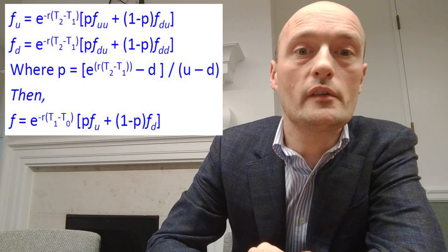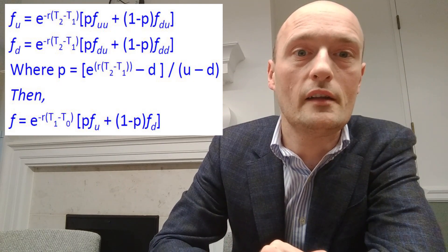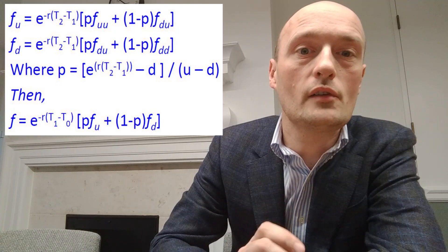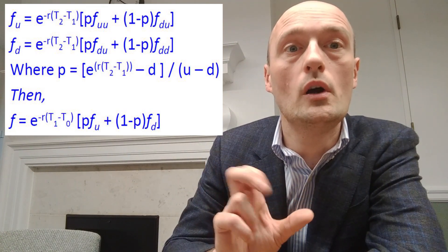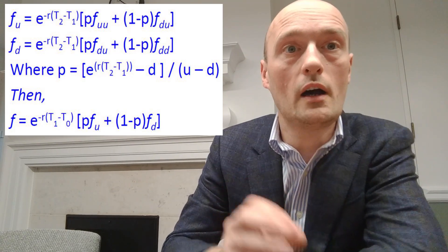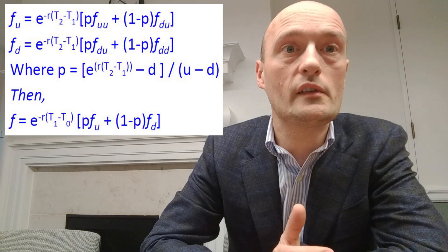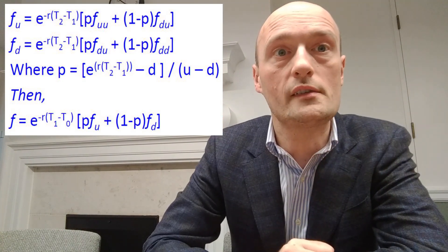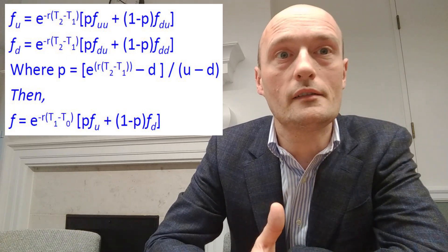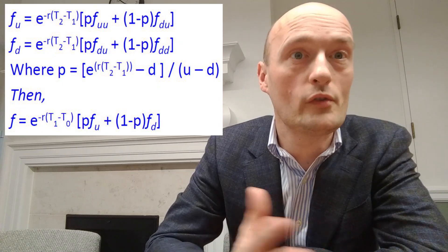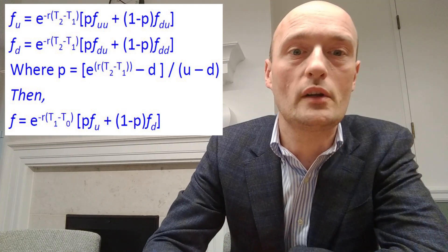Now one thing it's worth noting here is when you see the formula up on the screen, the difference between this one and the last one is it says e to the minus r times (t2 minus t1). What that really means is just that we have to divide up the time, the life of the derivative. So if it's a one month derivative and we're doing a two-step binomial tree, well the time period for each step has to be half of a month, and the reason for that is that otherwise we'd be over discounting the derivative, we'd be making a mistake in our present valuing.